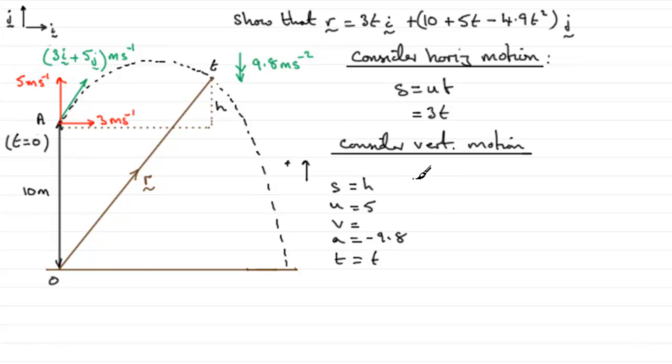So what equation would we use to connect these together? Well, it has to be s equals ut plus a half at squared. And so if we fill this in, we've therefore got for s, h equals u, which is going to be 5 times t, 5t, and then we've got plus a half times minus 9.8 for the acceleration and then t squared. And if we clean this up, we get that h equals 5t minus 4.9t squared.